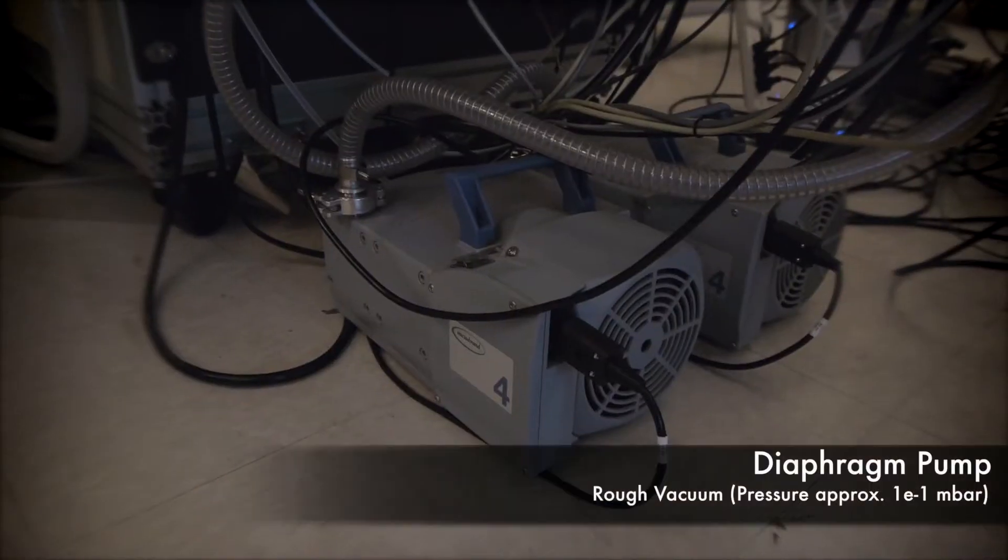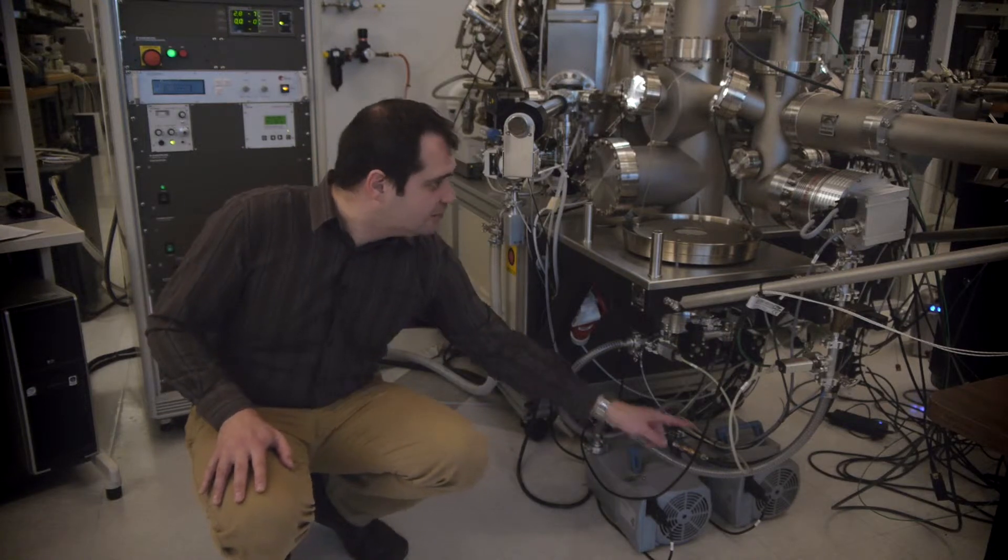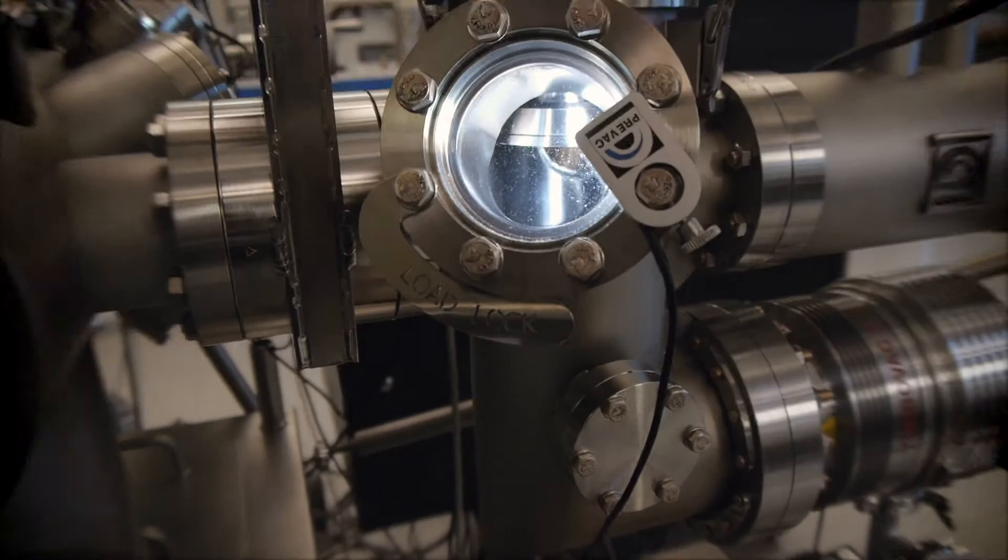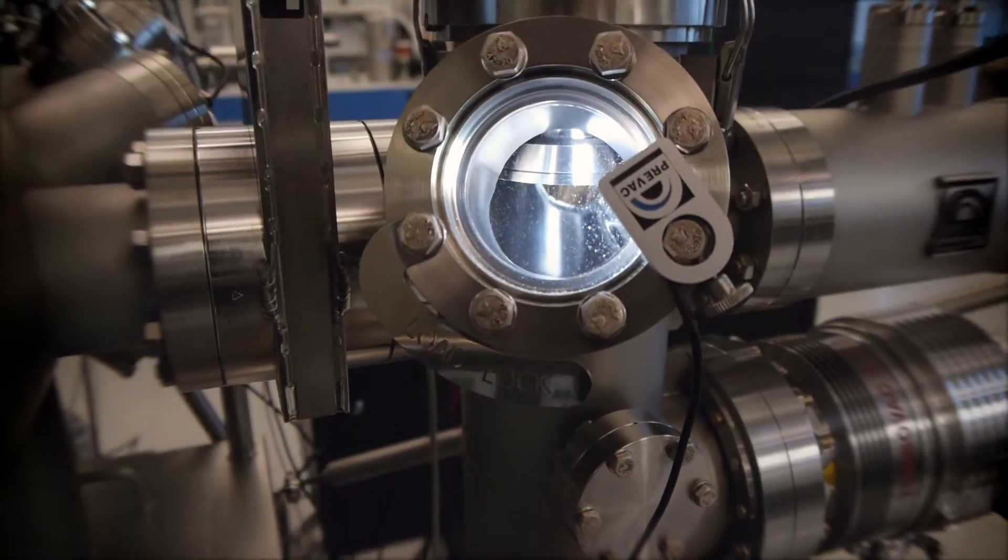Here we use a diaphragm pump. This will pump these lines, pump the whole chamber. So here we have our load lock and it would evacuate this all the way down to a rough vacuum.